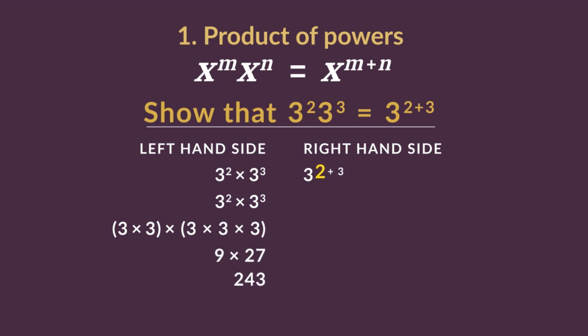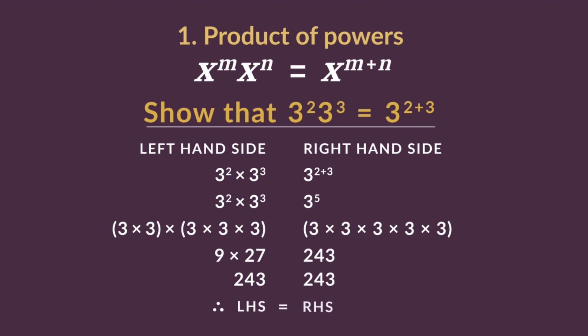If we add 2 and 3, we get 5. So on this side, we have 3 to the power of 5, which is 3 times 3 times 3 times 3 times 3. If you multiply this out, you will also get 243. And we've shown the law works.